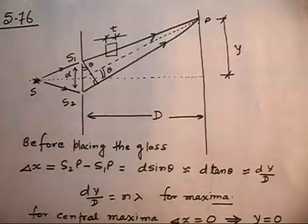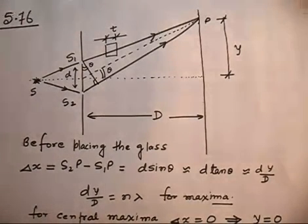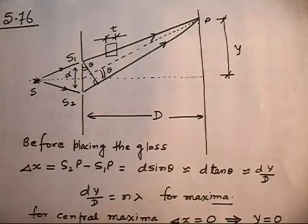Let me do the next problem. This is less problem, more theory. Just draw the Young's double slit experiment diagram and then we will discuss. Let us take one minute to draw the diagram — this is an easy diagram, not a difficult one.